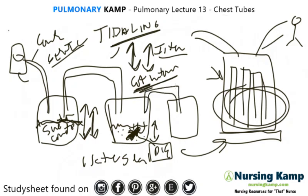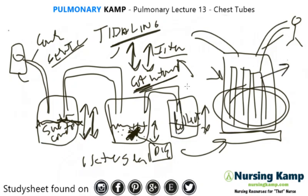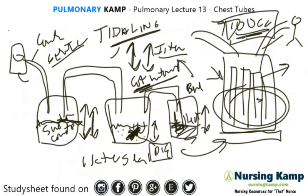The next chamber is called the collection chamber. In the collection chamber you shouldn't see titling — it shouldn't go up and down because you're collecting fluid from the patient. You also shouldn't see bubbling. The rule of thumb is that greater than 100 cc's of drainage is acute and the doctor should be notified. This applies to continuous monitoring, not immediately after a chest tube is first placed.